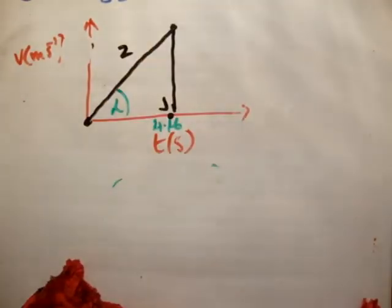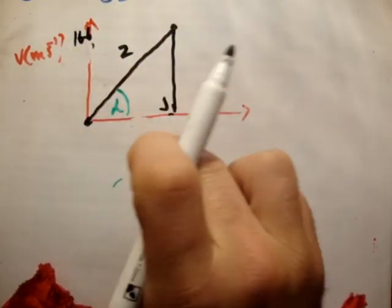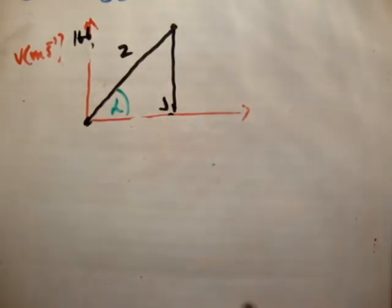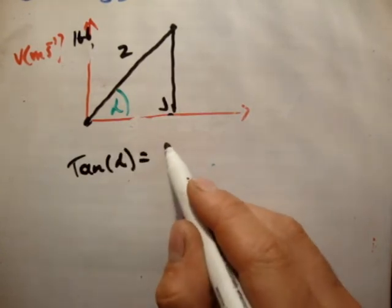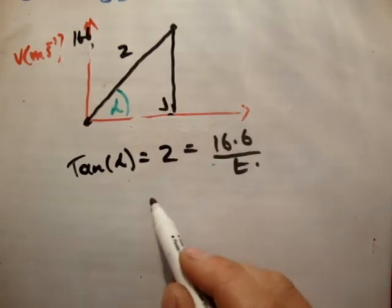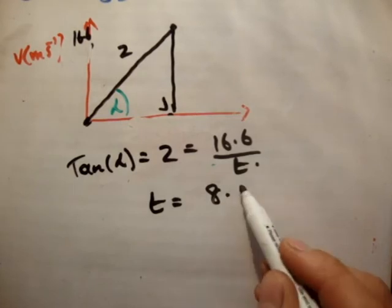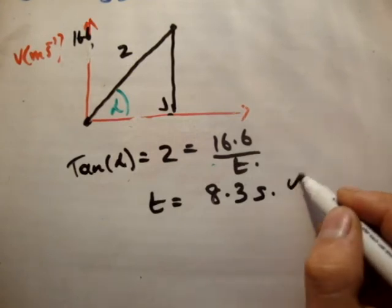So 16.6. We'll use the same diagram. We'll say this is 16.6 m/s. We don't know what this time is here. The same thing: tan(α) equals 2 equals 16.6 over T. Therefore, T equals 8.3 seconds. After 8.3 seconds, its speed will be 16.6. Let me check. 8.3 seconds, that's correct.